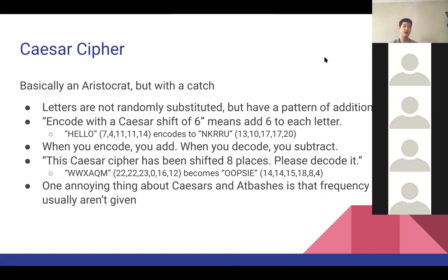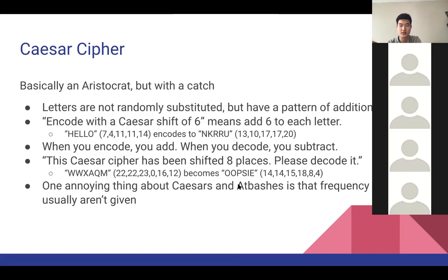When you encode, you add. Since encoding and decoding are opposites — legible to illegible versus illegible to legible — when you decode, you do subtraction. So if a Caesar cipher has been shifted 8 places and I need to decode it, I subtract 8. For example, W is 22, 22 minus 8 is 14 which is O. Frequency tables usually aren't given for Caesar and Atbash, but you can pretty much see which letters are frequent just by scanning the problem.